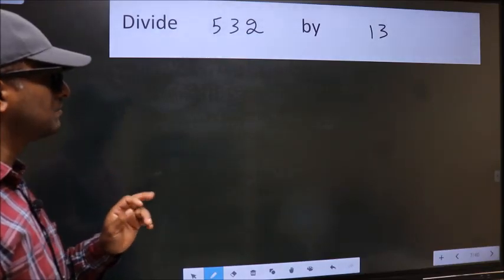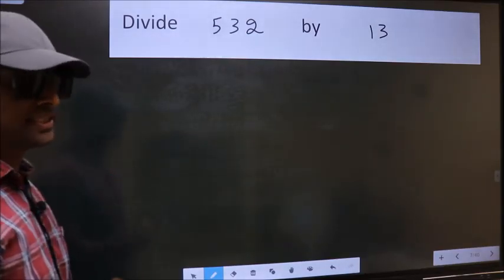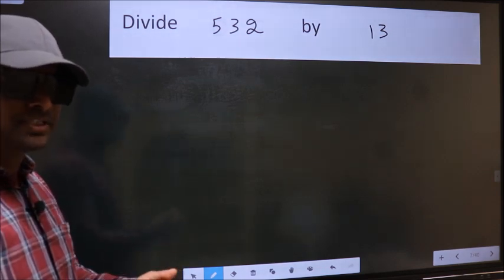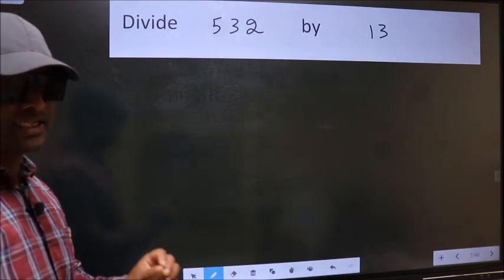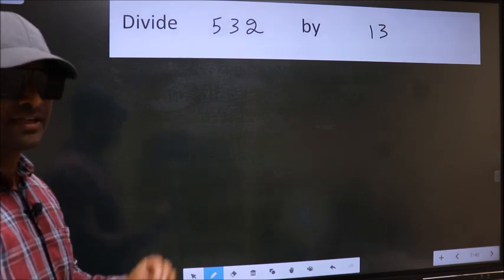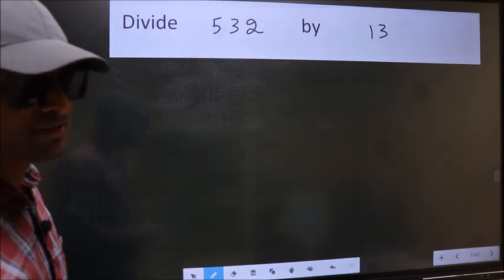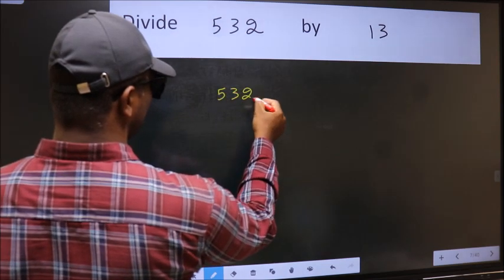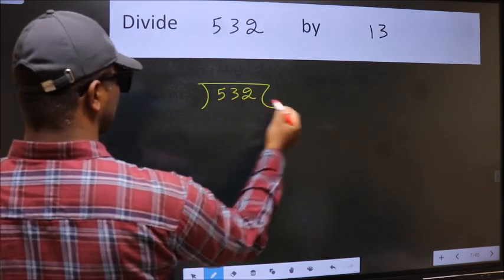Divide 532 by 13. While doing this division, many do this mistake. What is the mistake that they do? I will let you know, but before that we should frame it in this way: 532 and 13 here.